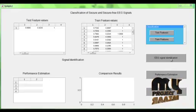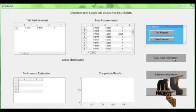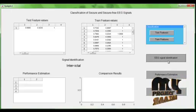Then, EEG signal is identified by clicking on EEG signal identification push button. The signal is interictal.